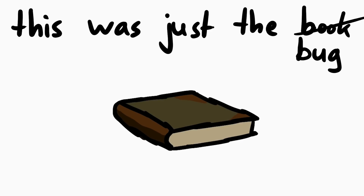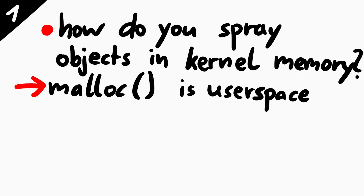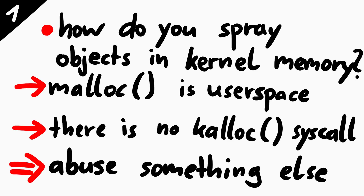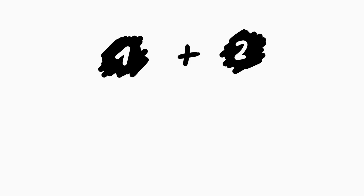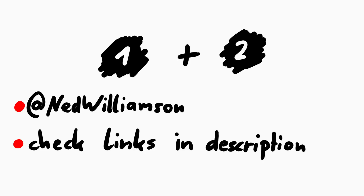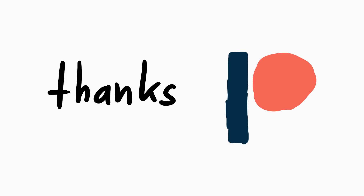This is awesome — I really learned a lot from this. Now this is of course not the whole exploit; this is just the bug itself explained. The questions you should have now are: first, how do you actually spray objects in kernel memory? Malloc allocates in user land and there's no kernel alloc syscall, so you need to abuse something else to allocate buffers. And second, what do you do with the arbitrary free — what other kernel object do you target and how do you find it in kernel memory to point your controlled pointer to? If you're curious, follow Ned on Twitter and check the description for links. Thanks to everyone on Patreon for supporting these videos.